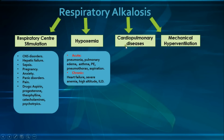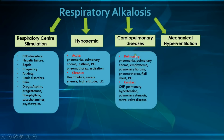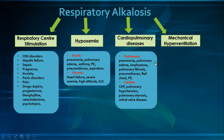Now with the third category, which is cardiopulmonary diseases. In this category, we have various pulmonary and cardiac causes which cause hyperventilation through stretch and pressure receptors present in the lungs and heart, causing reflex hyperventilation irrespective of the presence of hypoxemia. Many of those causes are the same as in hypoxemia, such as pneumonia, pulmonary edema, emphysema, pulmonary fibrosis, pneumothorax, flail chest, and pulmonary embolism. For the cardiac causes, such as CHF, pulmonary hypertension, pulmonary stenosis, and mitral valve disease, all of which stimulate those stretch or pressure receptors in the lungs or the heart.